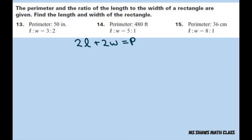For problem 13, here's our formula. We know the length to width is 3 to 2, so we're going to say the length is 3x and the width is 2x, and use substitution to fill everything in.